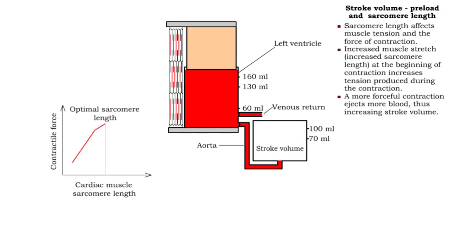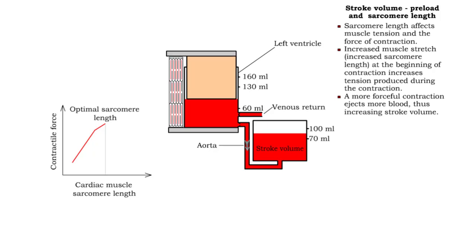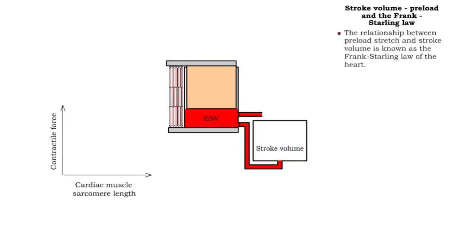An increase in muscle stretch increases tension. A more forceful contraction ejects more blood, thus increasing stroke volume. The relationship between preload stretch and stroke volume is known as the Frank-Starling law of the heart.